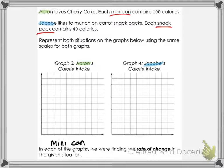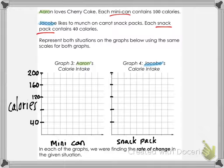Even though Aaron is dealing with a mini can and Jacoby has snack packs, both would be our x-axis — one mini can or one snack pack — so we're counting by intervals of one. The y-axis will be calories. We want the same scale for both graphs, so I'm going to count by 40s on the y-axis, and count by 1s on the x-axis, just like the previous problem.